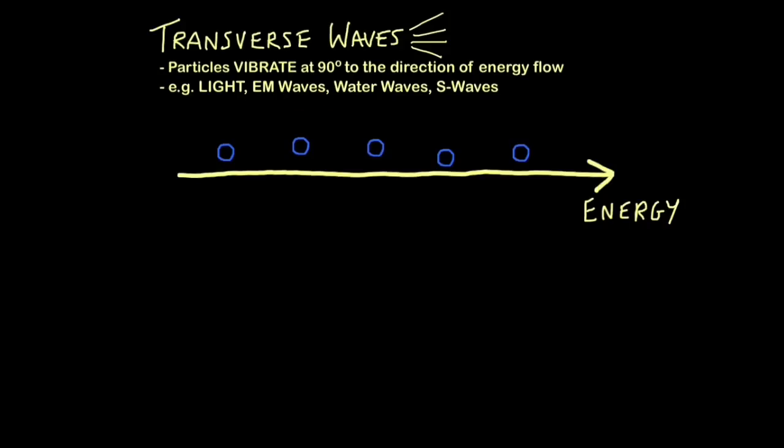Things like UV, X-ray, radio waves, gamma rays, infrared, all those travel as transverse waves. Water waves are transverse, and S-waves - this is to do with earthquakes. So as energy travels forward, the particles are disturbed at 90 degrees to the direction of energy flow, at right angles.